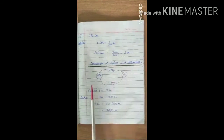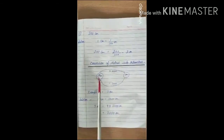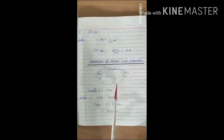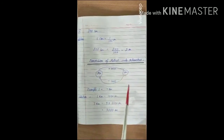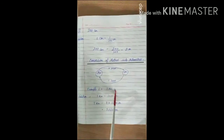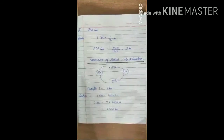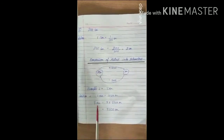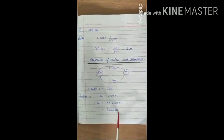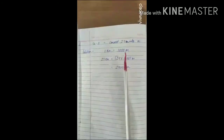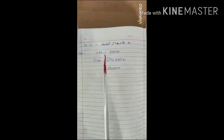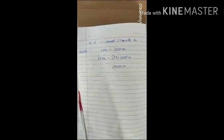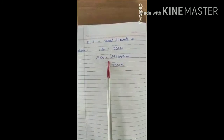Conversion of meter into kilometer. When we convert kilometer into meter, we multiply by 1000. When we convert meter into kilometer, we divide by 1000, because 1 kilometer equals 1000 meters. Example: 7 kilometers multiplied by 1000 equals 7000 meters. Second example: 29 kilometers multiplied by 1000 equals 29,000 meters.